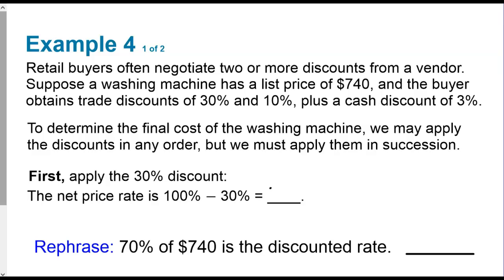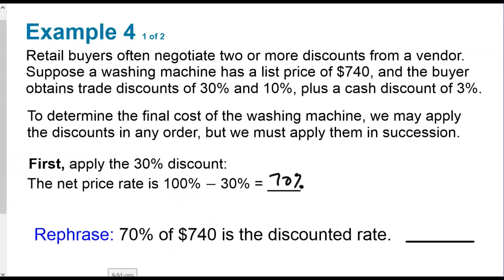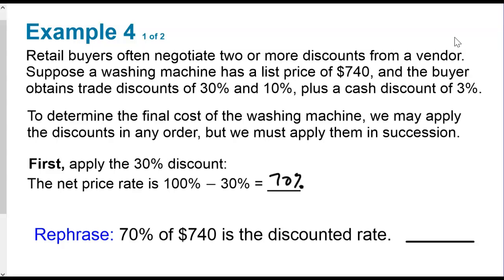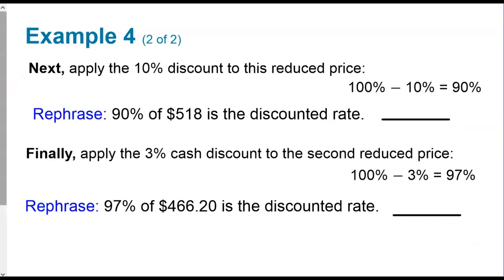In this case, we're going to apply the 30% discount. And so 100% minus 30% is 70%. And so 70% of $740 is the discounted rate. And so we'll go $740 times 0.7. And it's going to be $518 is our first amount.